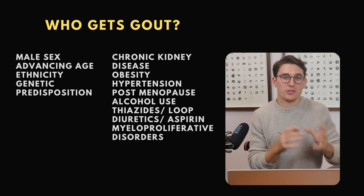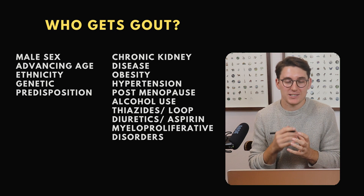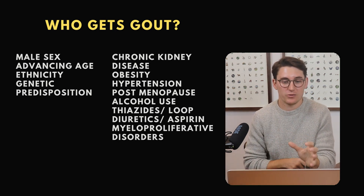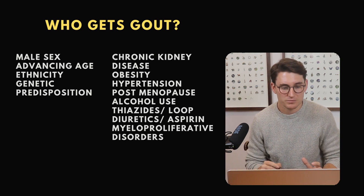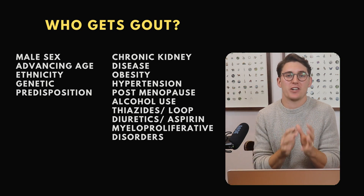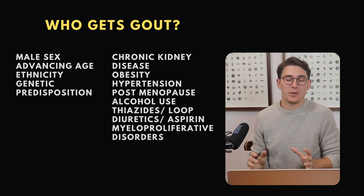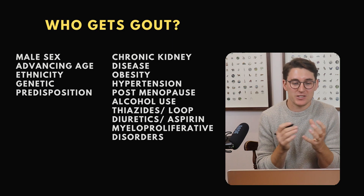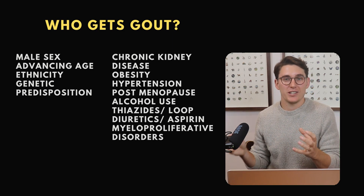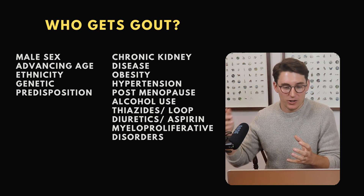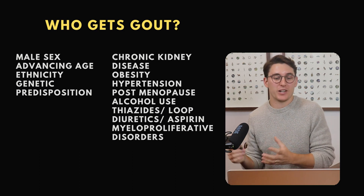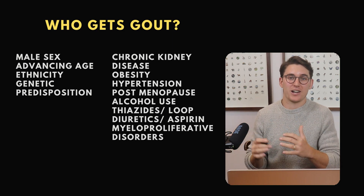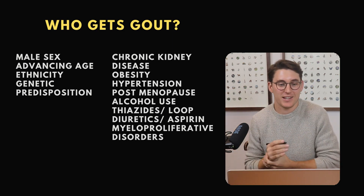There are many modifiable and non-modifiable risk factors that predispose someone to developing gout. Gout generally occurs on approximately a nine-to-one basis in men over women, because men have naturally higher levels of serum urate — they don't have estrogen, which naturally lowers serum urate. That's why women who are postmenopausal will reach more comparable levels of gout to men in the ninth and tenth decades of life.